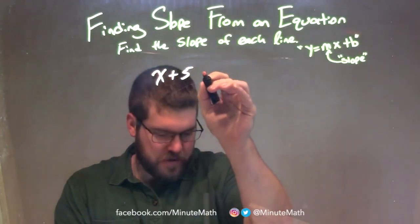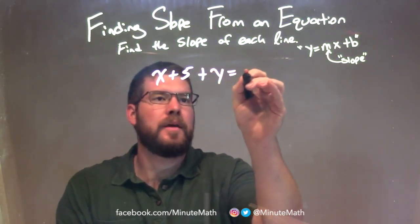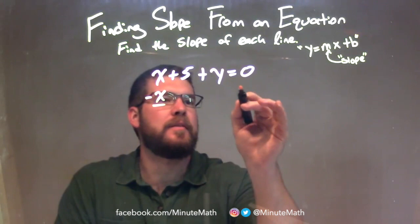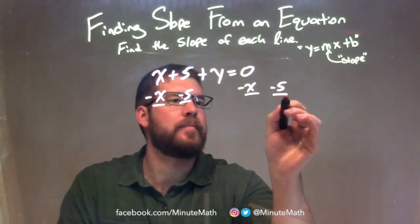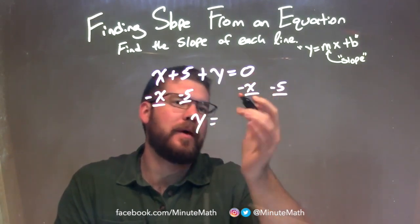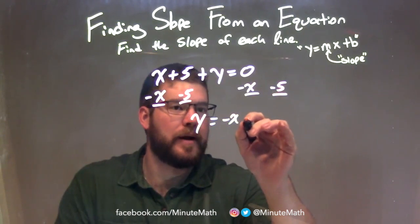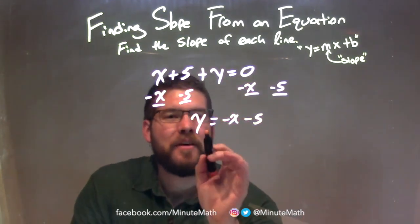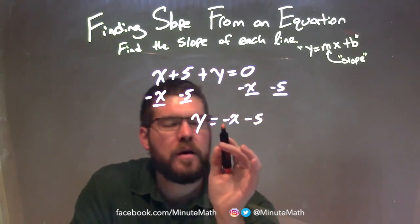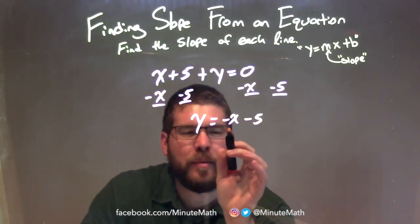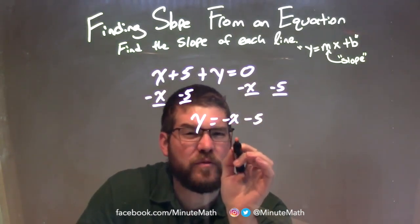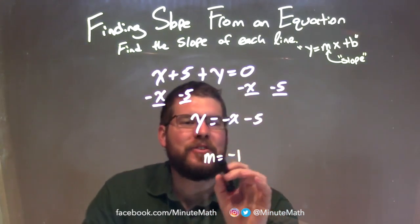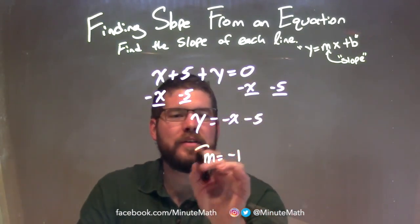x plus 5 plus y equals 0. I need to isolate y, so I subtract x and subtract 5 from both sides. That leaves y isolated: 0 minus x is negative x, and minus 5 is left. So y equals negative x minus 5. I now have it in slope-intercept form, y equals mx plus b. The m value is the coefficient in front of x. That negative is really negative 1 — don't write negative x as the slope, that's incorrect. So our slope is m equals negative 1. That is our final answer.